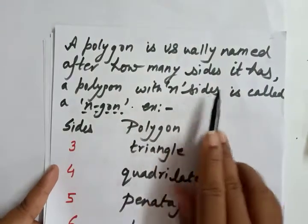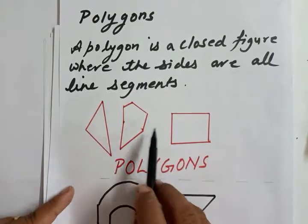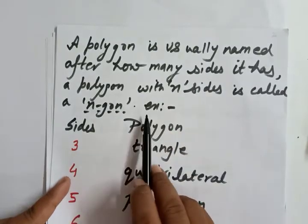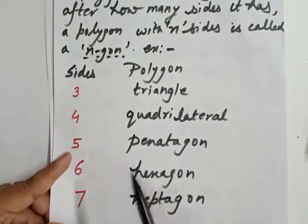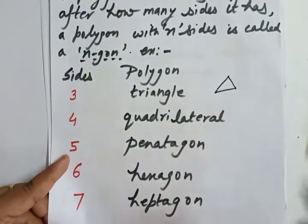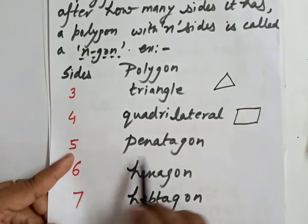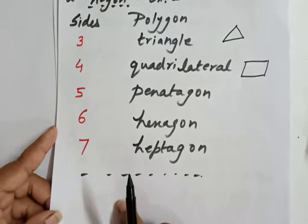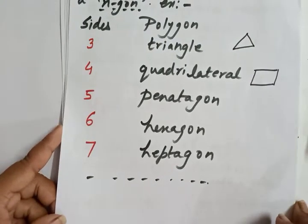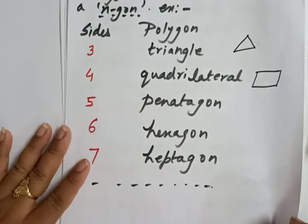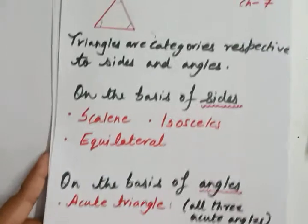A polygon is usually named after how many sides it has. A polygon with n sides is called an n-gon. For example, if it has three sides it is called a triangle, four sides a quadrilateral, five sides a pentagon, six sides a hexagon, seven sides a heptagon, and so on. The polygon is named by checking how many sides it carries.